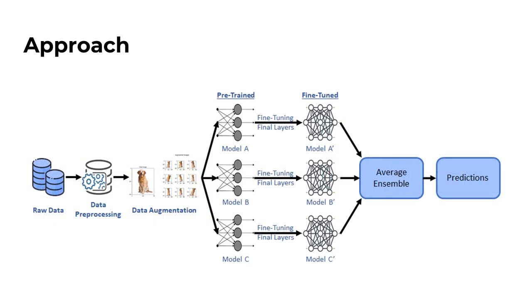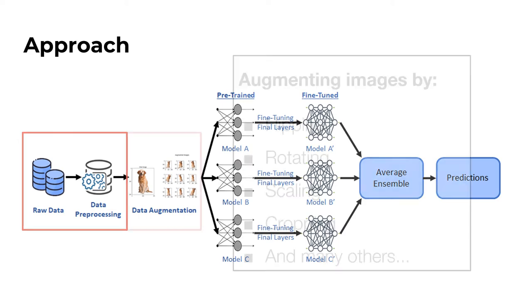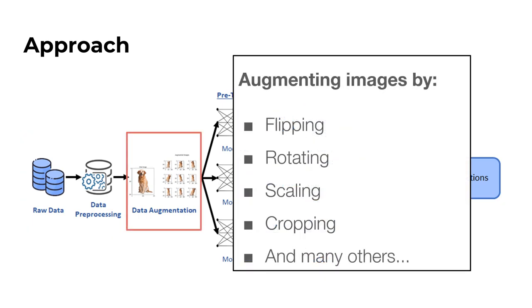This diagram presents a model training framework. From raw images of dogs with the respective labels, we perform preprocessing to convert images into appropriate formats for learning. Data augmentation generates more data for the model to learn from. Common data augmentation techniques for images include rotation, flipping, and cropping.